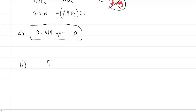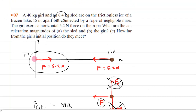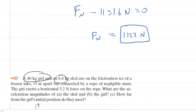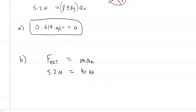For the girl, F net equals her mass times her acceleration in the x direction. Using 5.2 Newtons as the only horizontal force, and the girl's mass of 40 kilograms, we divide both sides by 40 and get the girl's acceleration of 0.13 meters per second squared. This is the correct answer for the acceleration magnitude of the girl.